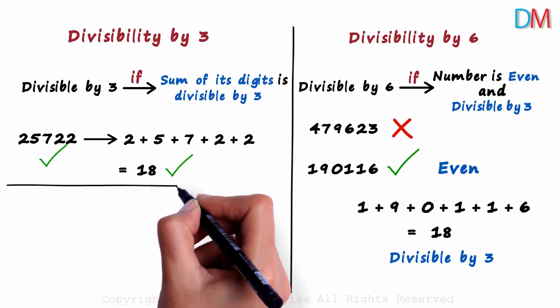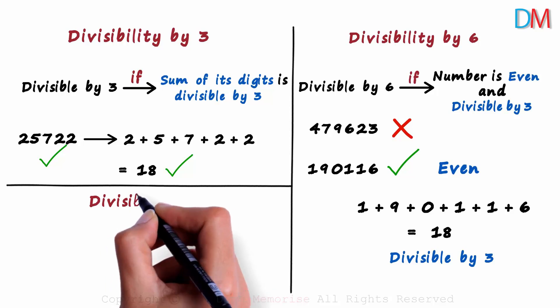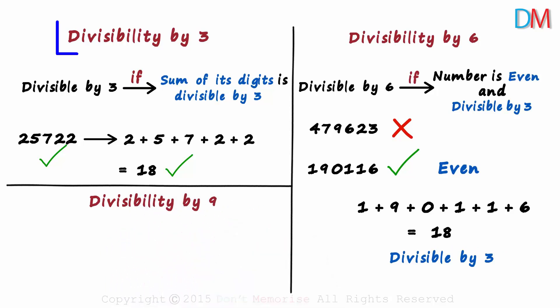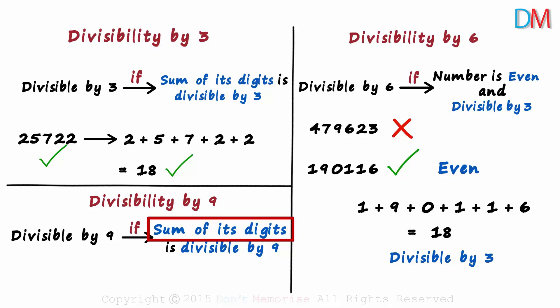Now we come to the final divisibility test of this video. The test for divisibility by 9 is similar to that of the test for divisibility by 3. A number is divisible by 9 if the sum of its digits is divisible by 9. Is 2,479,401 divisible by 9? The sum of the digits equals 27. Since 27 is divisible by 9, this number will also be divisible by 9.